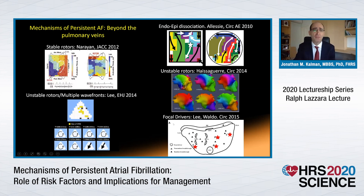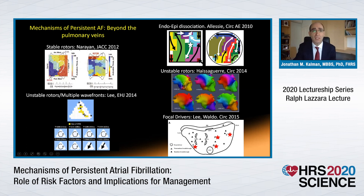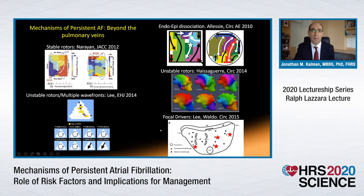I'm going to start with this slide, which highlights a number of different studies from recent years — clinical mapping studies looking at the mechanisms of persistent atrial fibrillation. We have the full array of different potential mechanisms: from the 64-electrode basket catheter mapping study of Sanjeev Narayan and stable rotors, to unstable rotors with body surface mapping, unstable rotors and multiple colliding wave fronts of epicardial mapping, endocardial-epicardial dissociation and longitudinal muscle bundle dissociation described by the group of Maurits-Alessi, and the focal driver hypothesis supported by the mapping work of Al-Waldo.